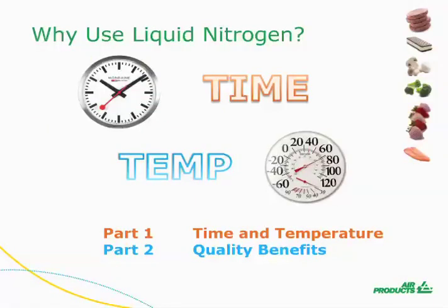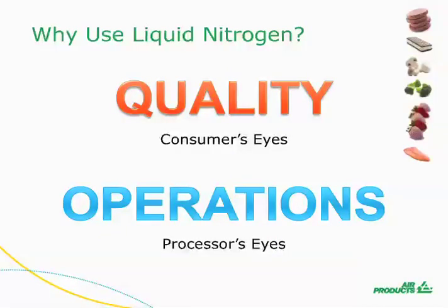We discussed in Part 1 that freezing and cooling foods is the removal of heat by placing food in a cold temperature environment for a period of time. If the time and temperature are appropriate, the food will be cooled or frozen as desired. If you missed Part 1, we encourage you to go back and watch that episode before continuing. So, why would you use liquid nitrogen in order to create the cold environment in a cooler or freezer? While there are many combinations of time and temperature that will freeze or chill foods, only by using liquid nitrogen are you able to realize several specific benefits stemming directly from the very cold temperature.